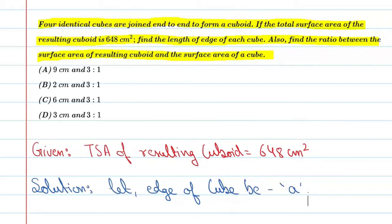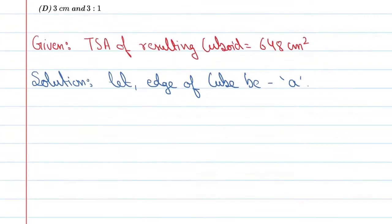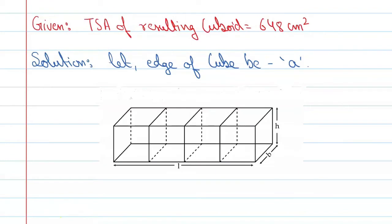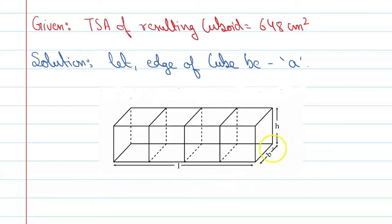Before moving forward, students, I'll draw a figure so we can understand this better and see how we can apply the concept. In this figure you can observe that we have joined 4 cubes end-to-end, giving us a resulting cuboid. Now if we talk about the length, breadth, and height of the cuboid, let's see what values we get. We have considered the side of each cube to be 'a'.